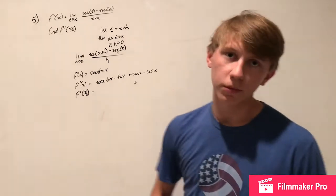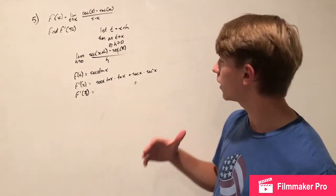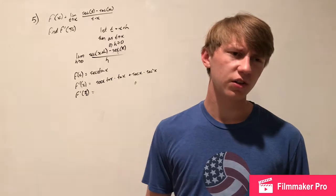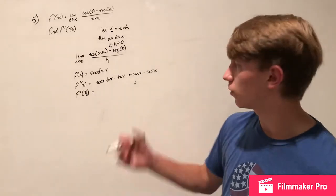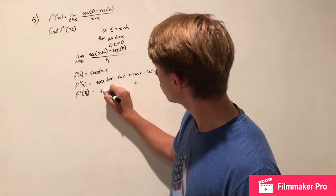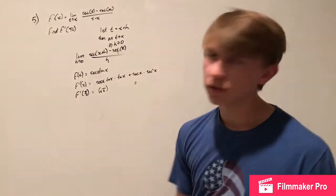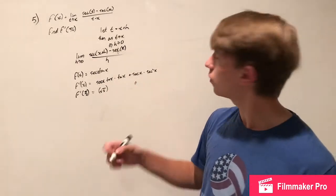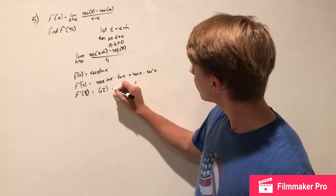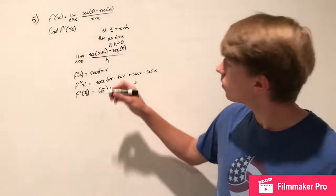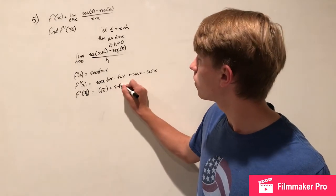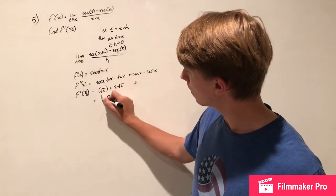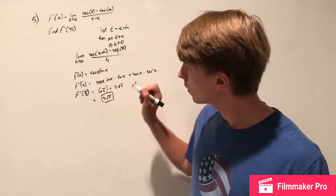We don't need to simplify; we just plug in pi over 4. Secant of pi over 4 is root 2, and tangent of pi over 4 is 1. So we get root 2 times 1 times 1 plus root 2 times root 2 squared, which is root 2 plus (root 2) cubed equals root 2 plus 2 root 2, which equals 3 root 2.